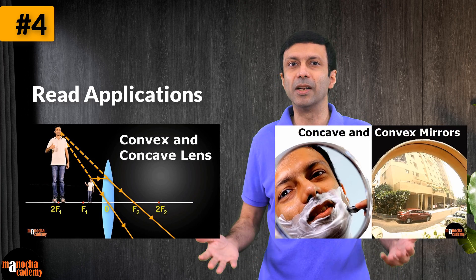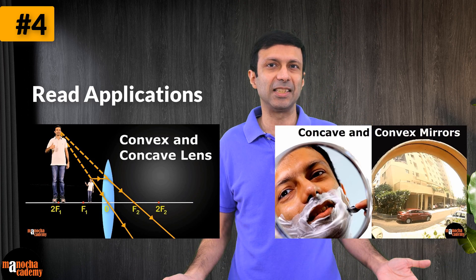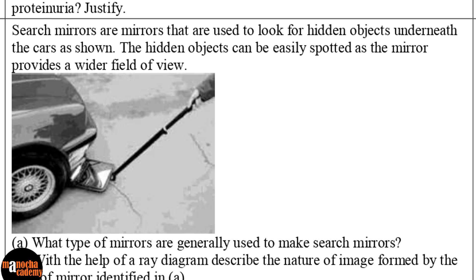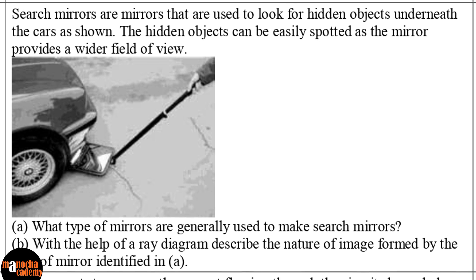Tip number 4: Read applications. Many times we skip over the applications and use cases given in our book and read only the theory and formulas. Don't do that. Whenever you see applications and examples given in your textbook or in videos, pay attention to them. For example, in convex and concave lenses or mirrors, you should know the different uses of these lenses and mirrors. You will often see questions on applications of lenses and mirrors in your papers, like this one in the CBSE sample paper. Remember that these competency or application based questions are testing your practical knowledge of the concepts, so make sure you read these applications and use cases.